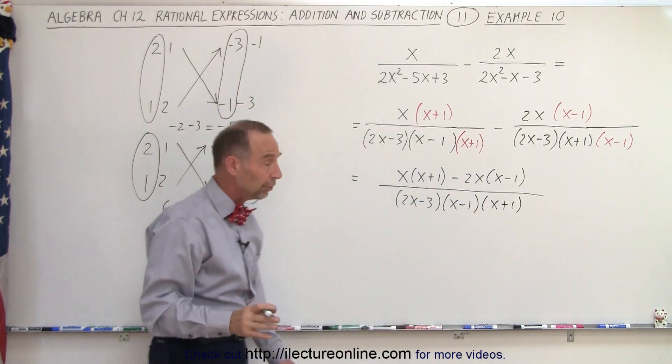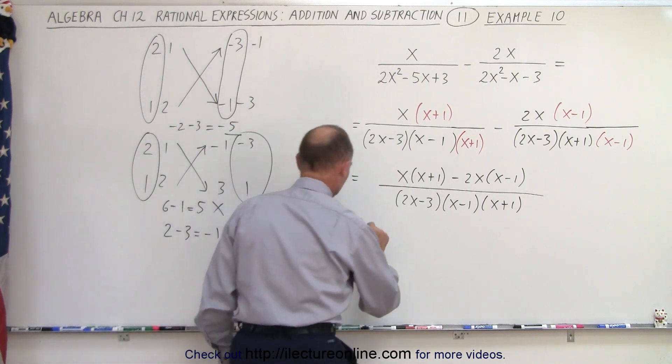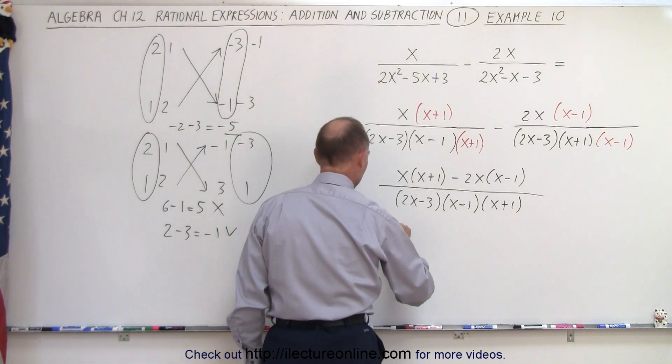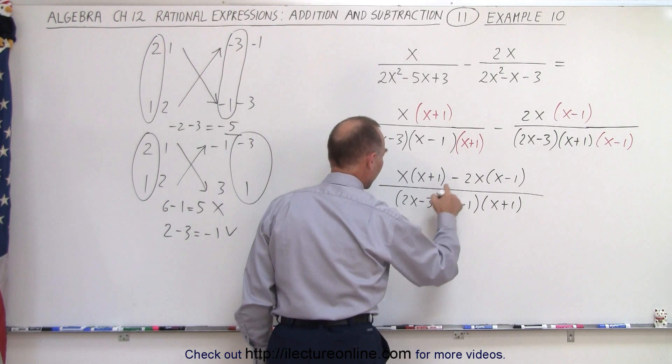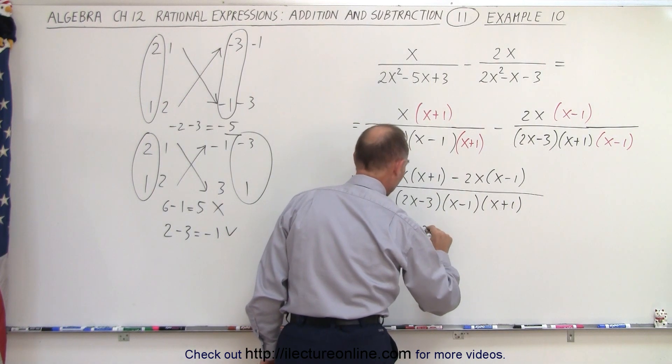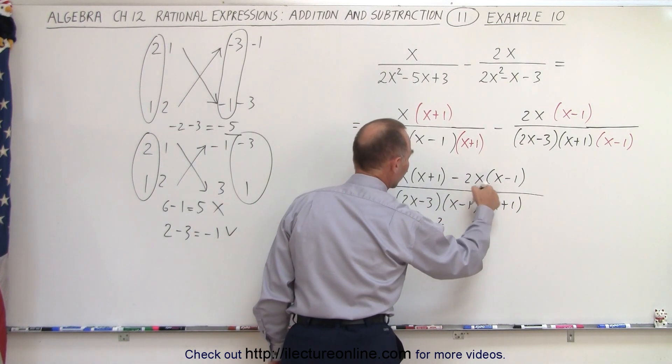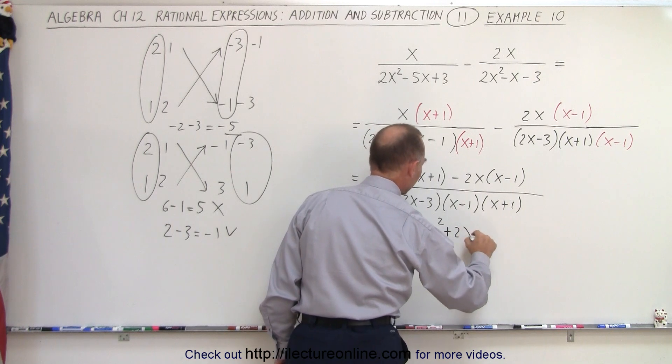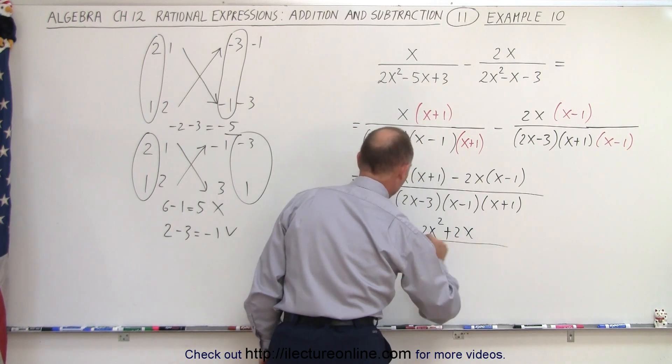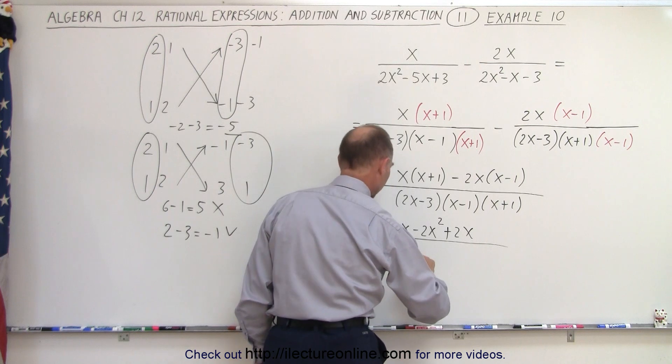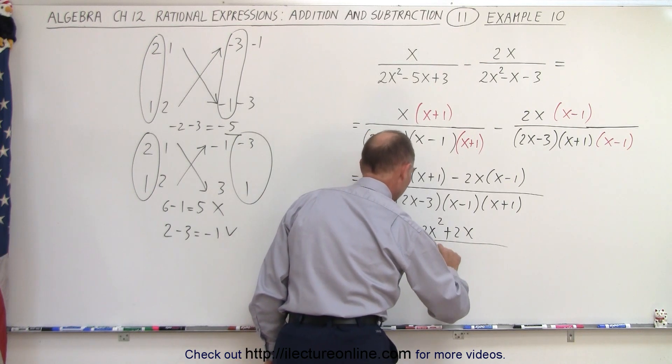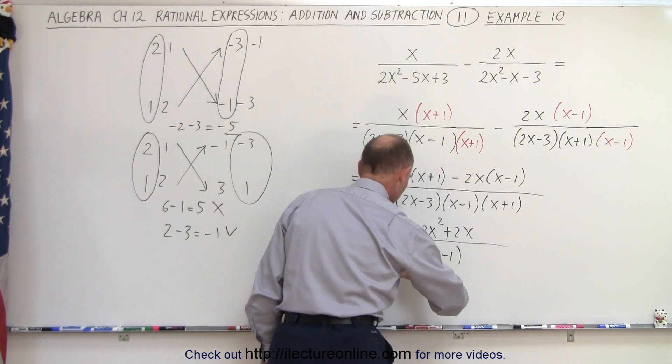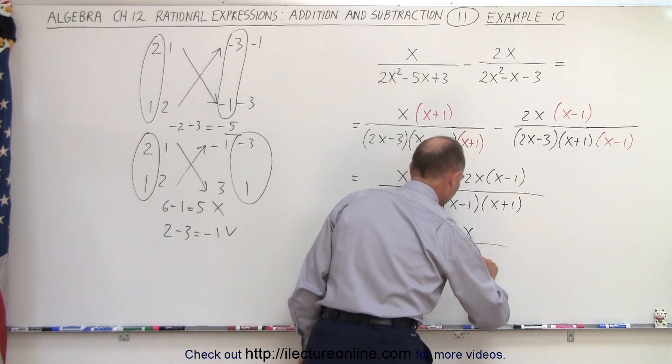Now what we have left to do is multiply everything out and collect common terms. So this is equal to x squared plus x minus 2x times x, which is minus 2x squared, minus 2x times minus 1, which is plus 2x, all divided by the same common denominator. That's a minus 3, x minus 1, and x plus 1.